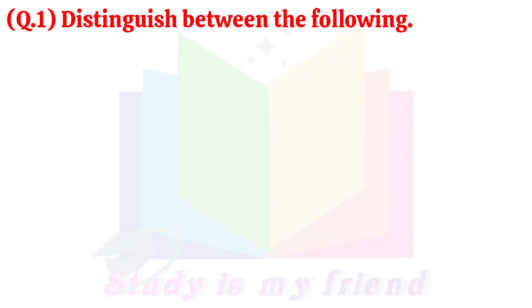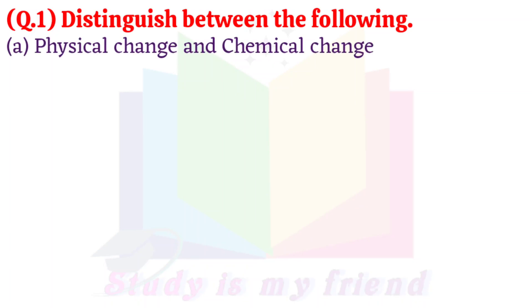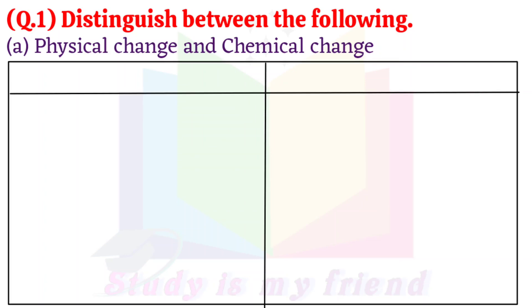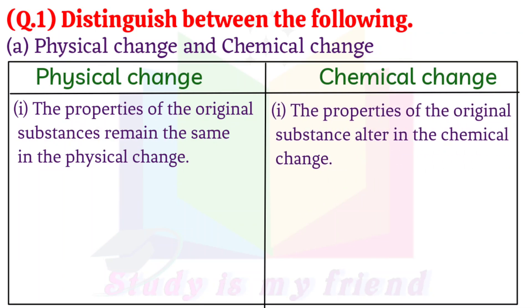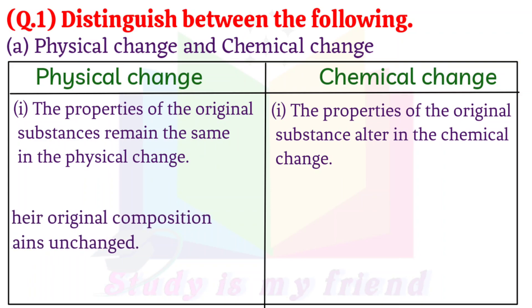Question 1: Distinguish between the following. A. Physical Change and Chemical Change. Physical Change 1: The properties of the original substances remain the same in a physical change. Chemical Change 1: The properties of the original substance alter in the chemical change.